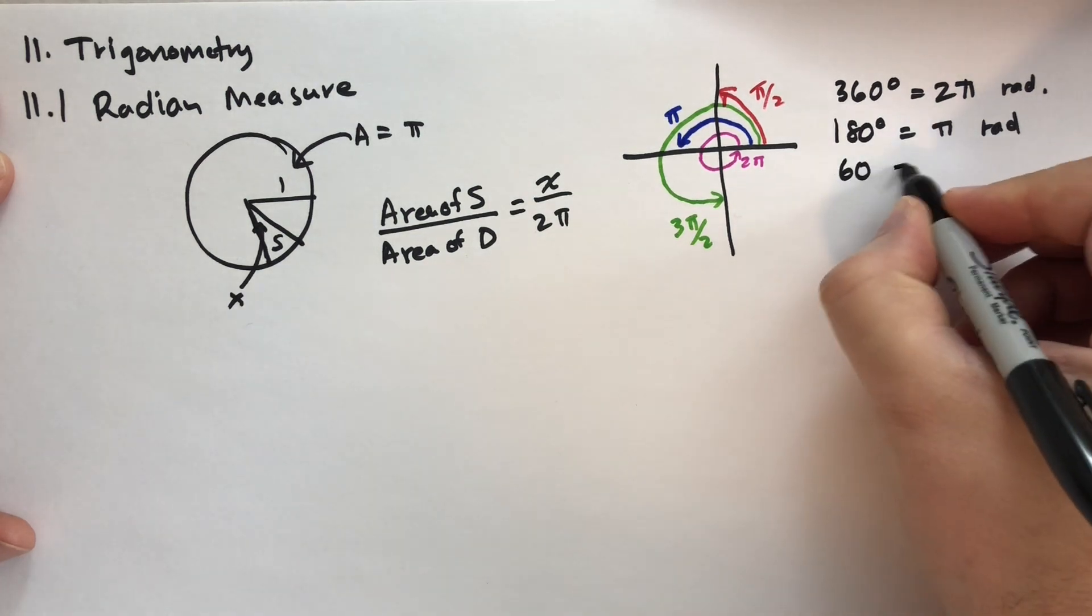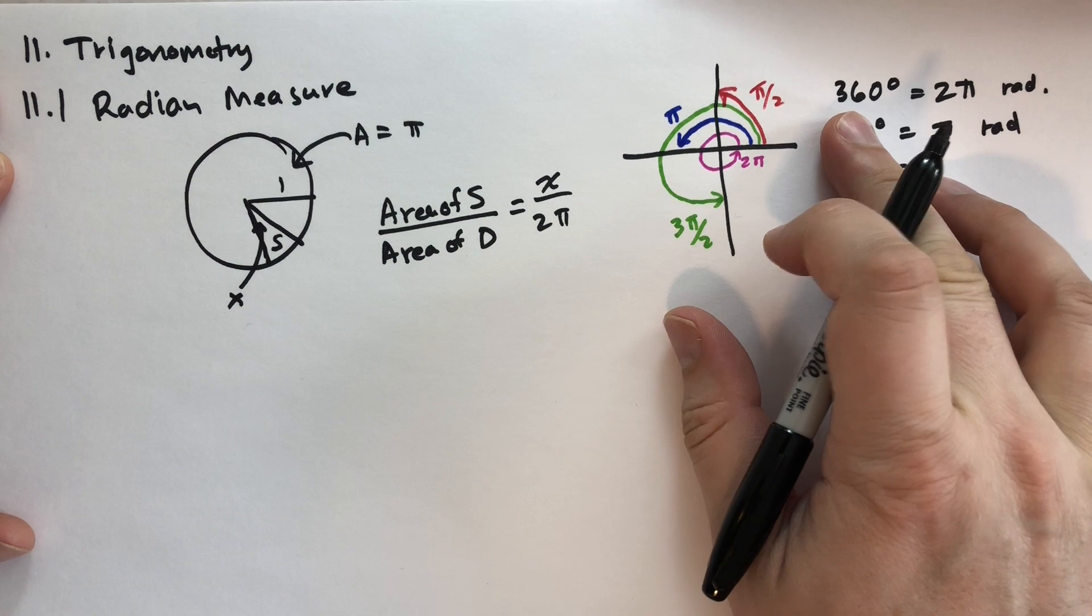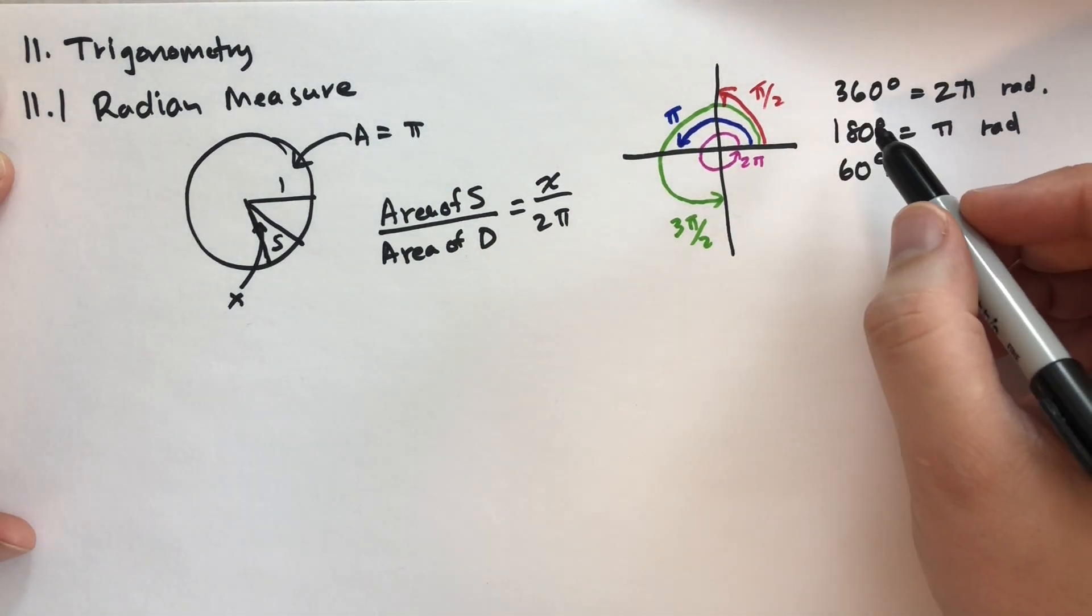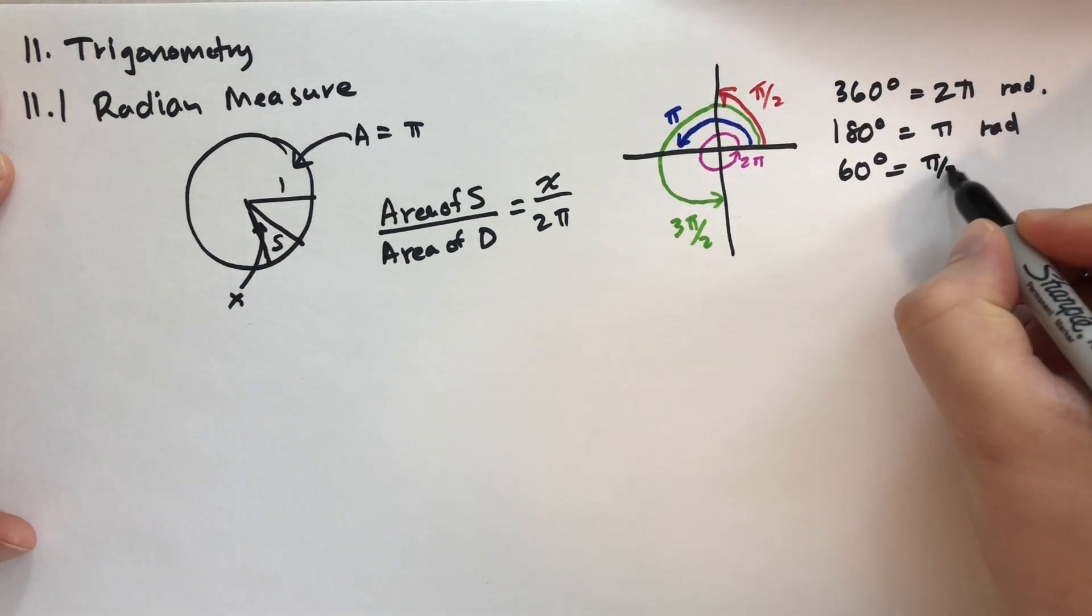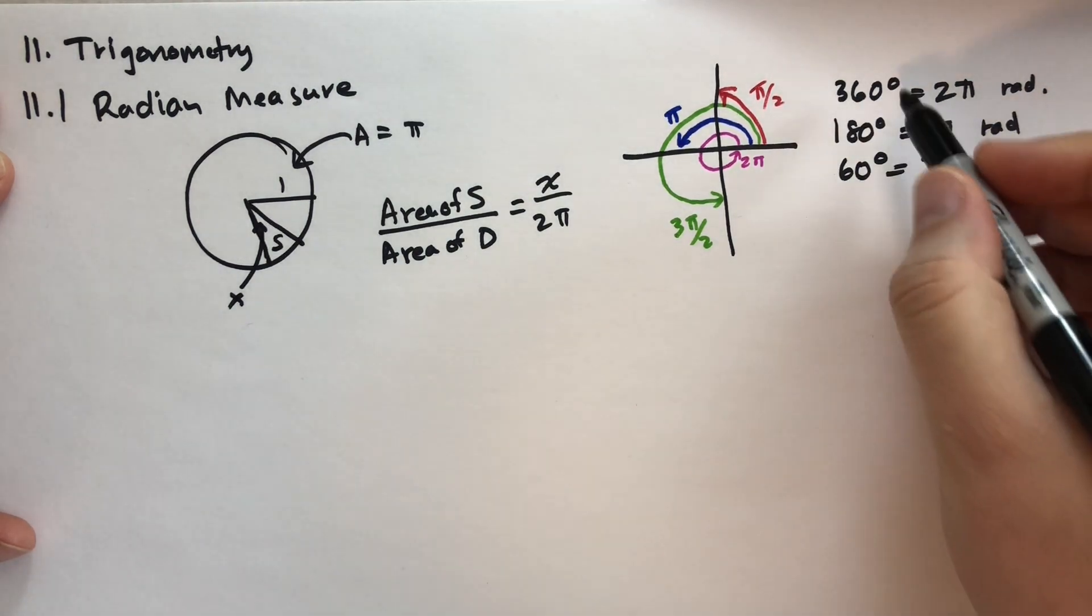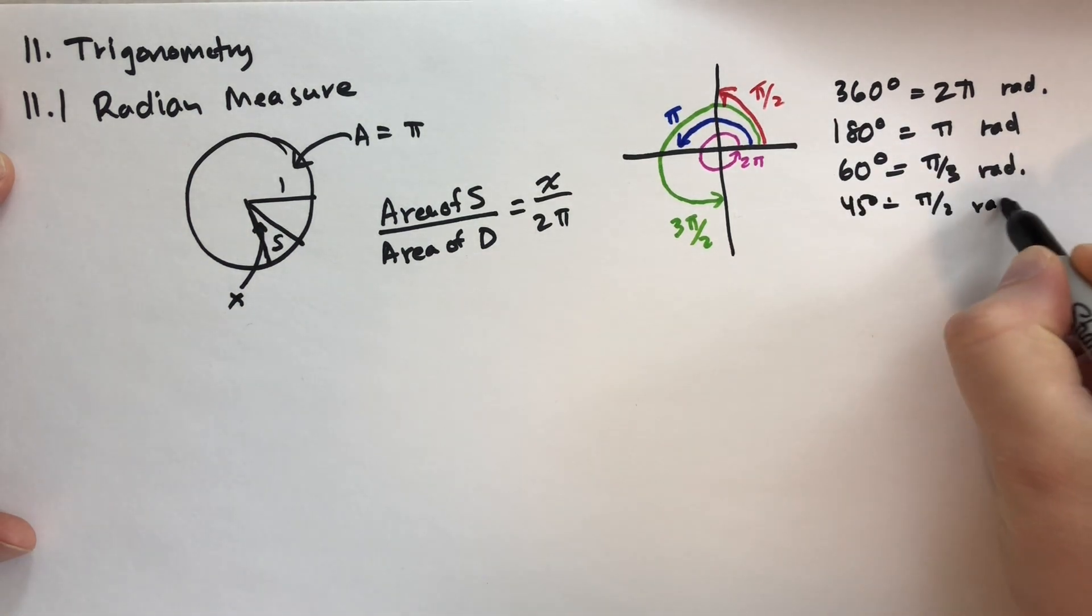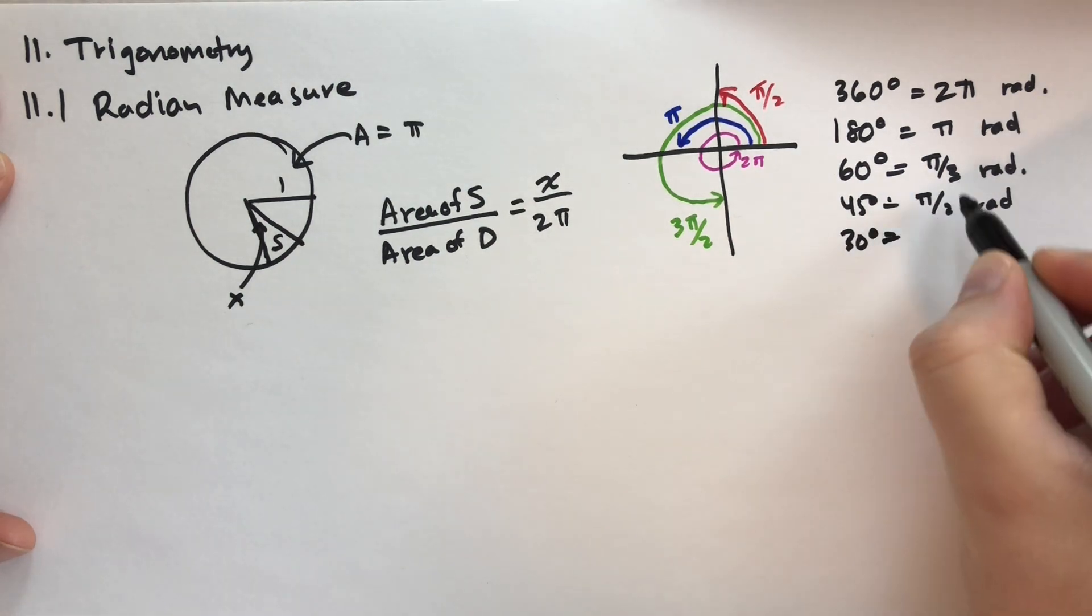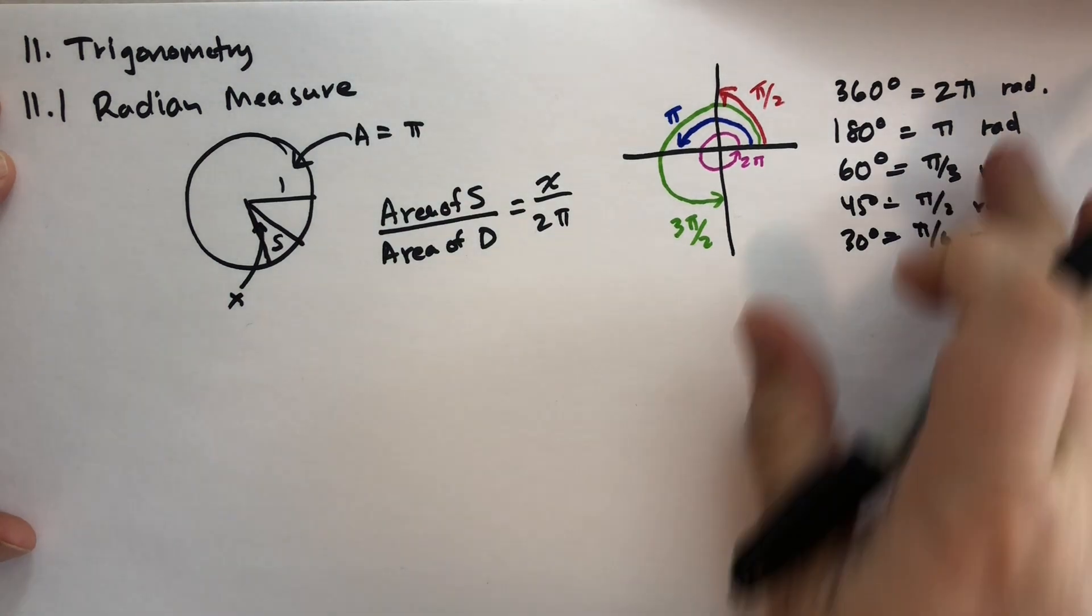And then we have 60 degrees, what would that be? Well, that's one-sixth, or one-third of that, because you take that, 120 would be third. No, yeah, that's one-sixth of 2 pi, so it's pi over 3. So it's one-sixth of the full circle. And 45 degrees is pi over 4 radians. And then finally we have 30 degrees, which is half of that third, so that's pi over 6 radians. And that's a little table that you can keep in your mind.